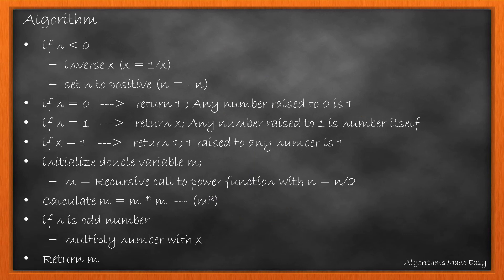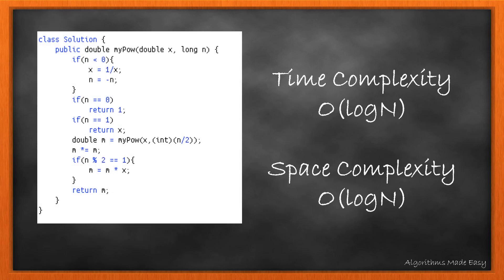Here's the algorithm. If n is less than 0, we inverse the value of x and set n to positive. Basic cases: if n equals 0, we return 1; if n is 1, we return x; and if x is 1, we return 1. Now we initialize a variable m and store the result of the recursive call to the power function with n equal to n by 2. We update m by m into m. If n is an odd number, we update m to m multiplied by x. At the end, we return m. The time complexity becomes O(log n) as at each call we reduce n by half. The space complexity is also O(log n) to store the recursion stack. You can find the link to this code in the description below.